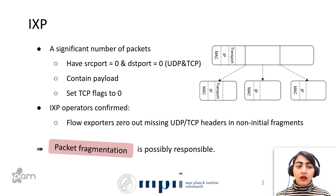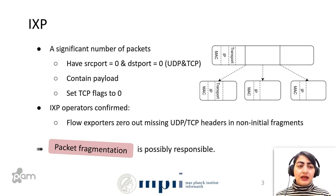In the IXP, packet fragmentation seemed to be responsible for port 0 traffic. However, we wanted to see whether there were other causes for port 0 traffic in the wild. Since in the IXP we didn't have full packet headers, we needed to look at other data sources.